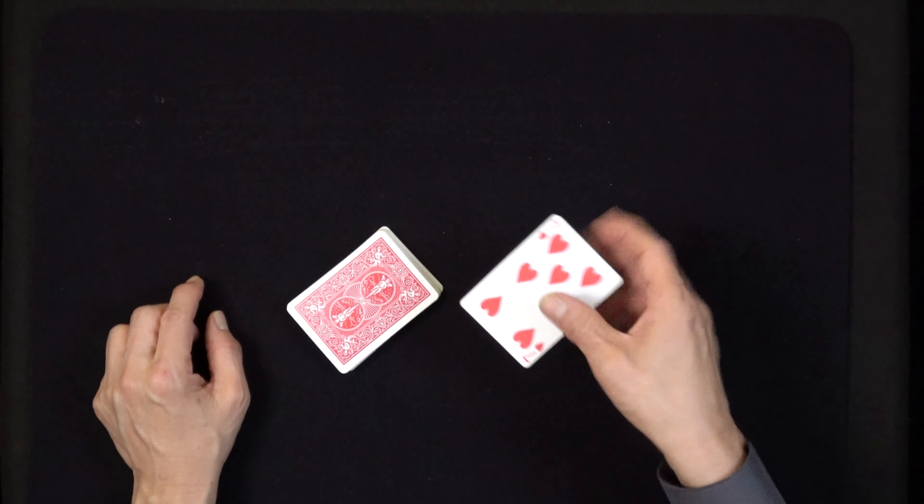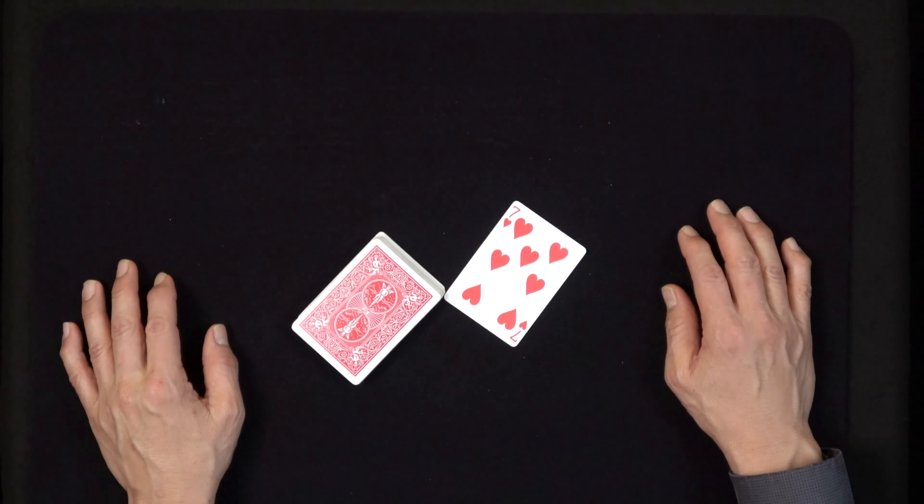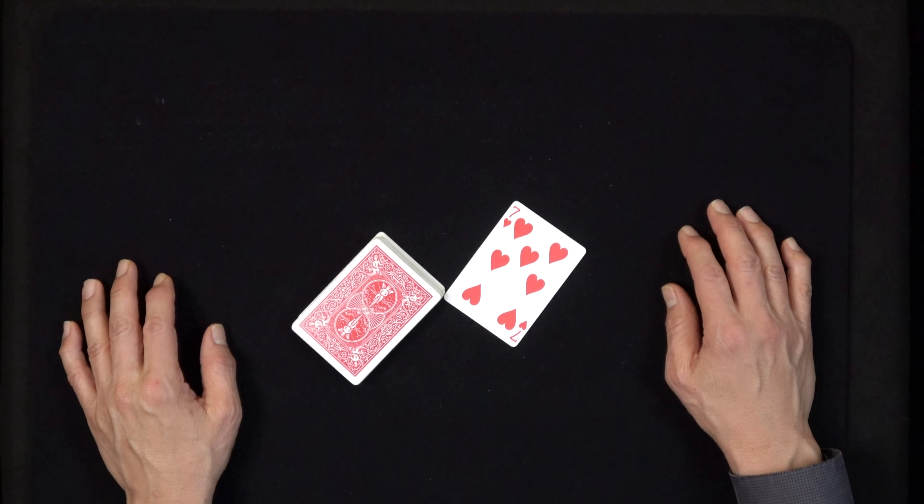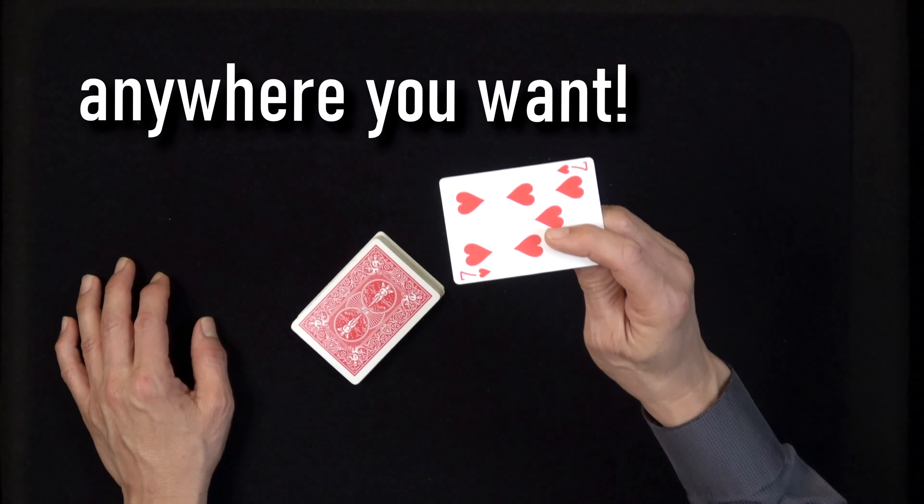And that way when you go through you can pretty much clearly show, and it appears the seven of hearts vanished from the deck, and then you can reveal it wherever it happens to be. In this case it's under here and there's your seven of hearts.